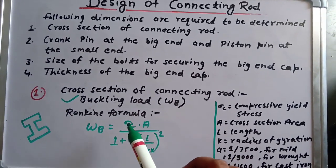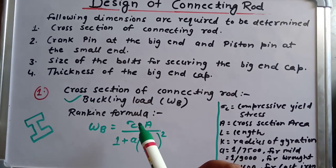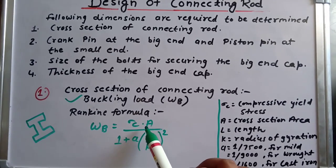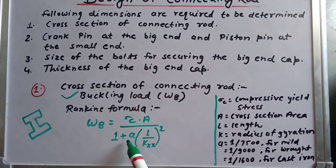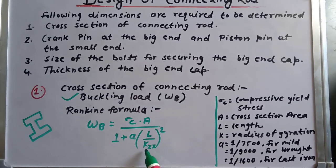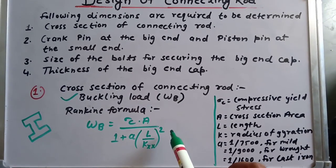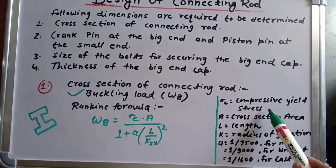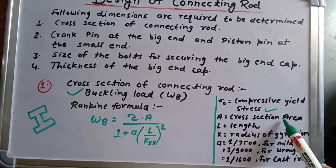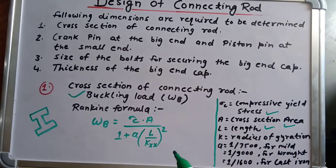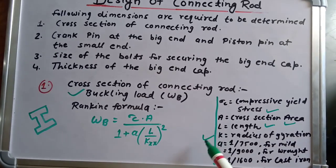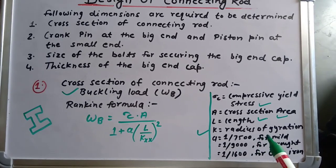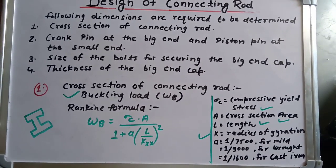The two most important things are the buckling load and the Rankine formula. The Rankine formula is used to determine the buckling load: Wb = σc · A / (1 + a · (L/k)²), where σc equals compressive yield stress, A equals cross-sectional area, L equals the length of the connecting rod, k equals the radius of gyration, and a is a constant.